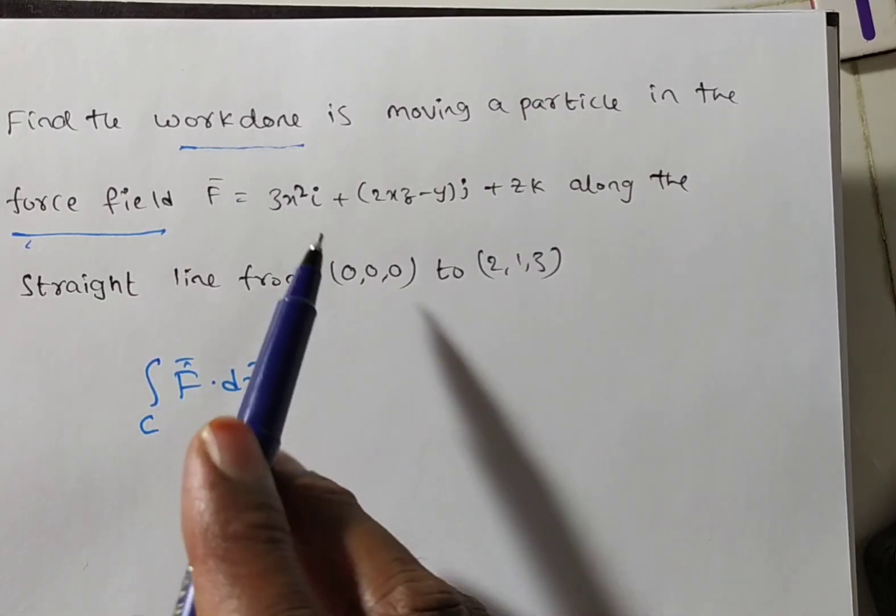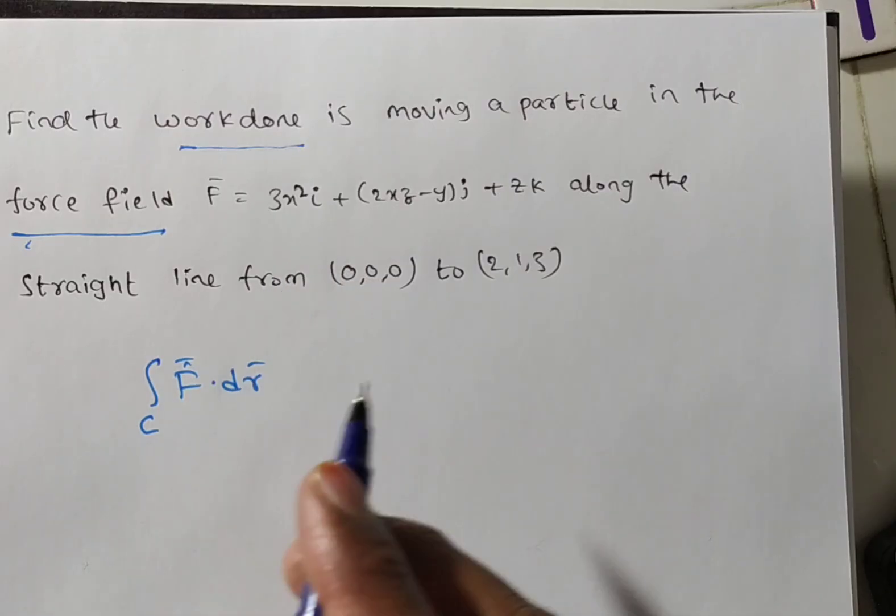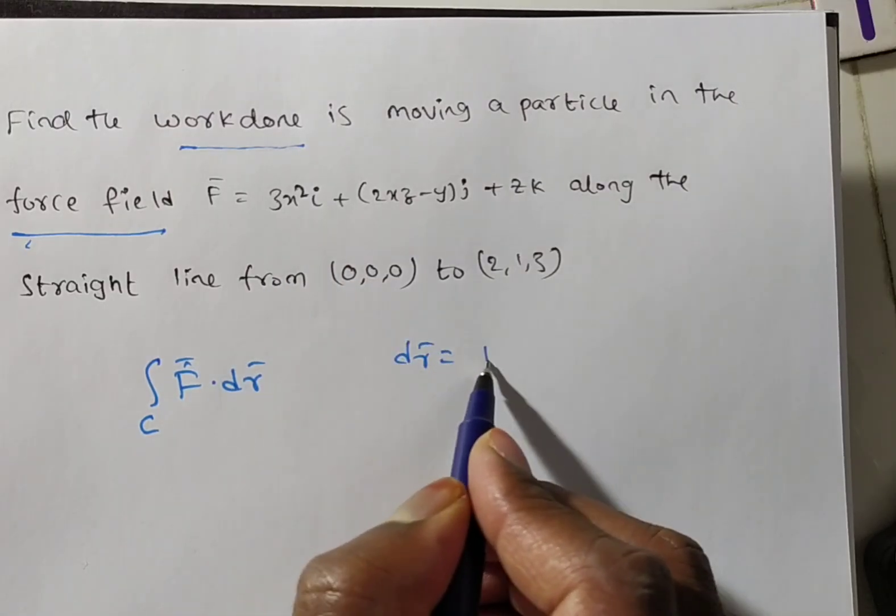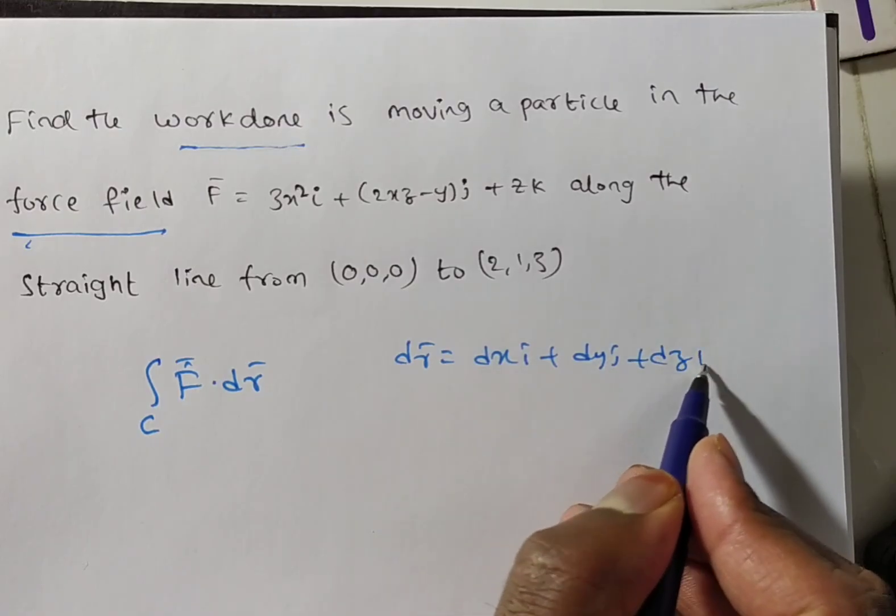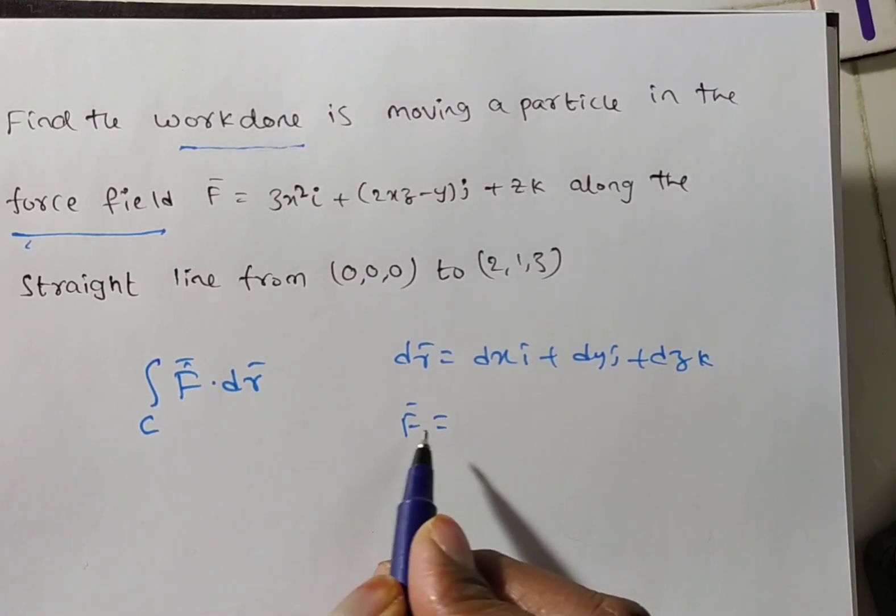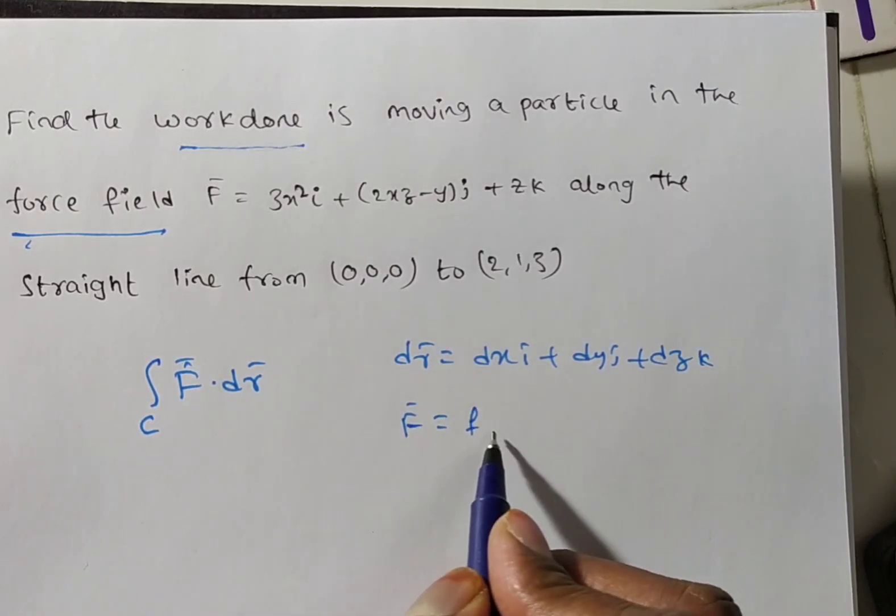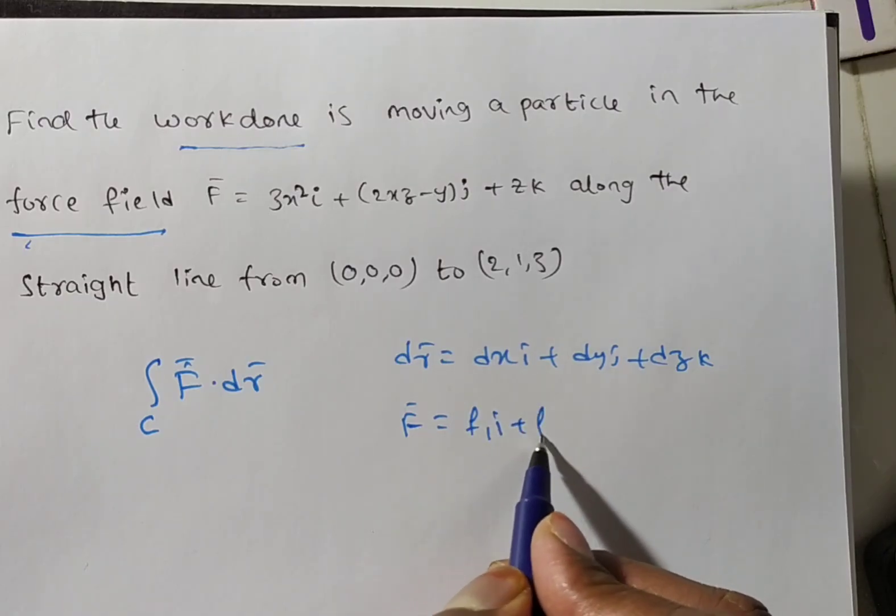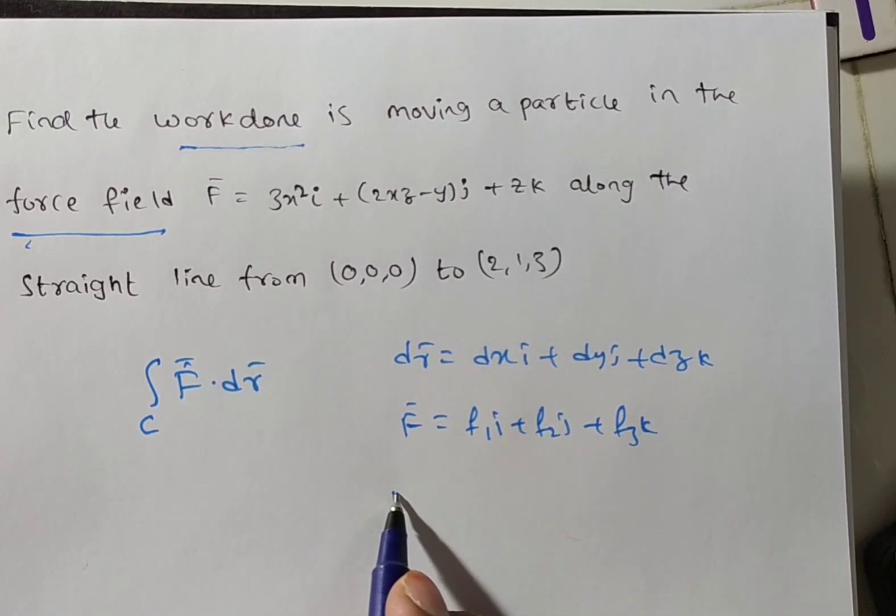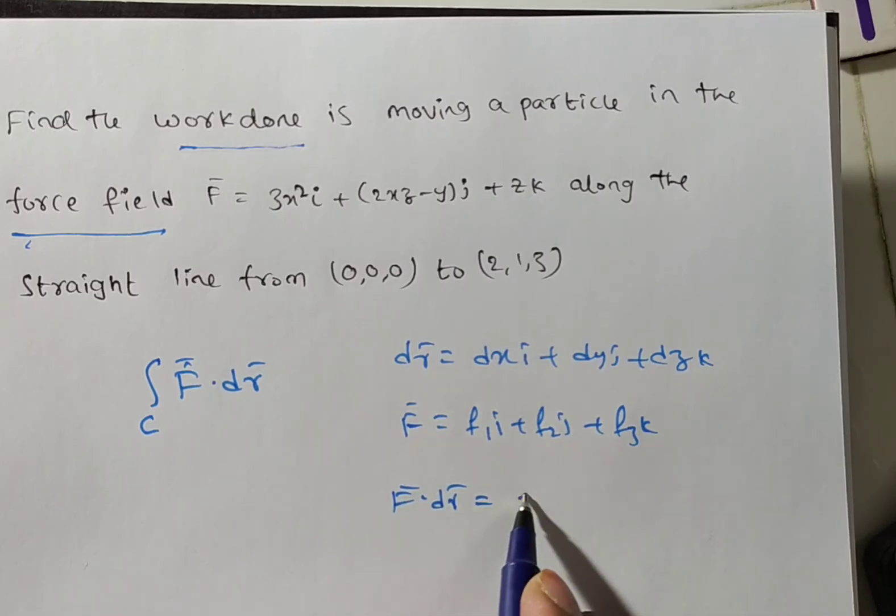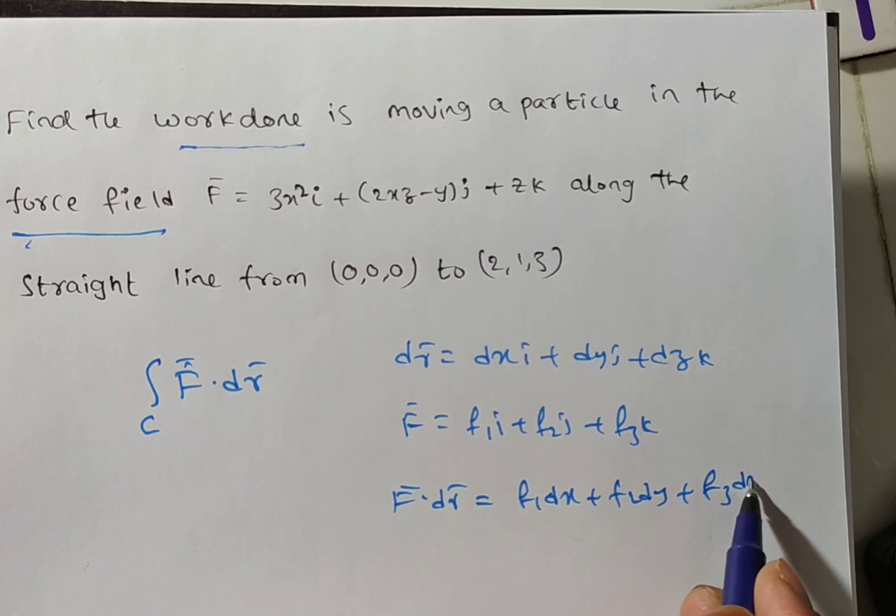Here you observe F bar are they given? Yes. What is dr bar we have? We have dr bar equals dxi plus dyj plus dzk. And what you can denote F bar as? F bar you can denote it with f1i plus f2j plus f3k.